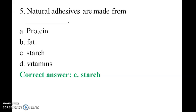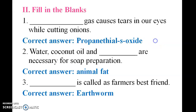Natural energy is made from starch. The answer is starch. The gas that causes tears in our eyes while cutting onion — dash gas.